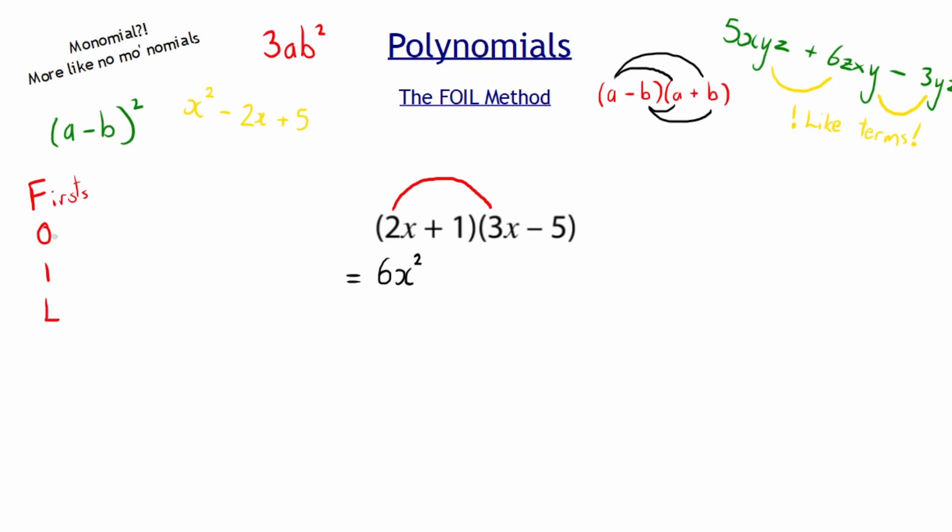Then the next letter is O, which means outer. So the outer edges of my expression here, which is 2x and the negative 5, the outside terms must multiply. So 2x multiplied by negative 5 is negative 10x.